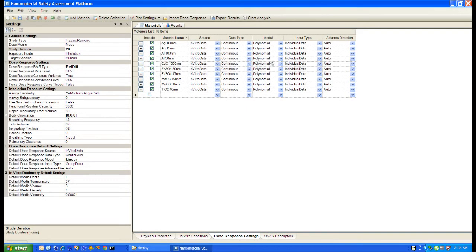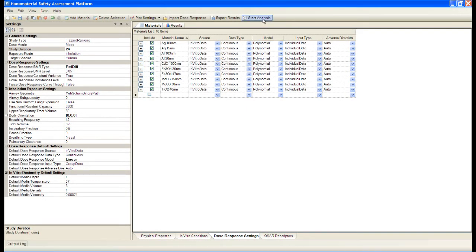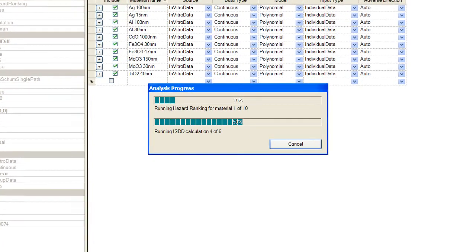To run the analysis, we simply click the Start Analysis button on the toolbar at the top of the window. A dialog will be shown, which displays progress of the analysis as each material is analyzed.